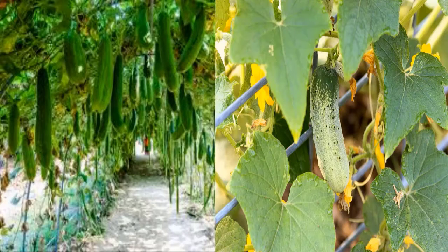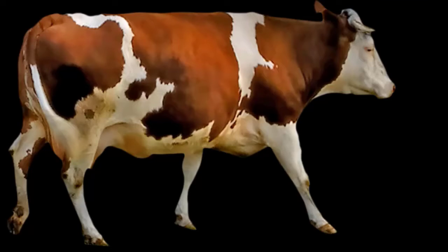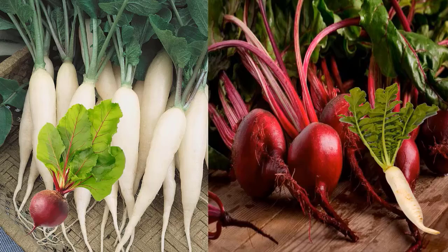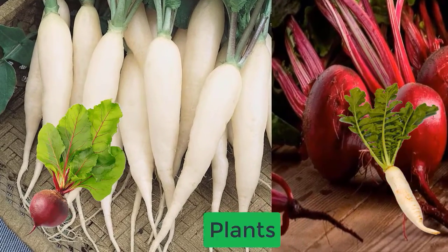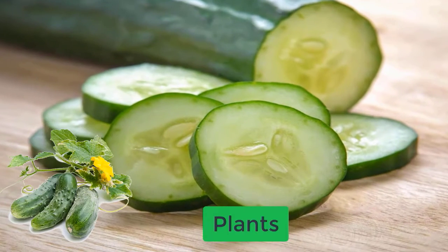We get energy for all our activities from food. We get some food items from plants and some from animals. Vegetables like radish and beetroot we get from plants. We get cucumber from plants.